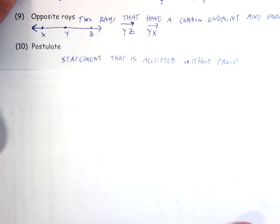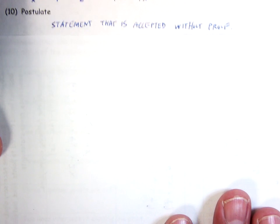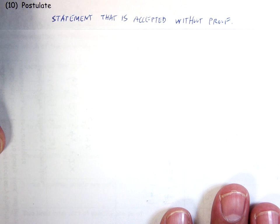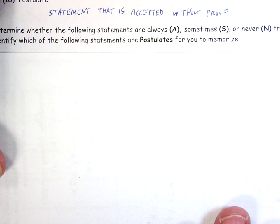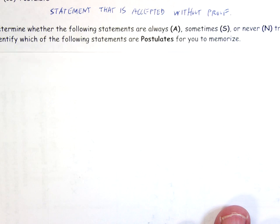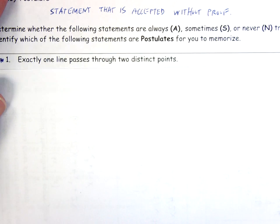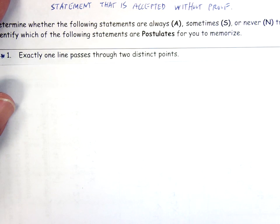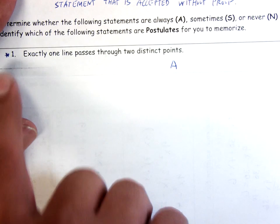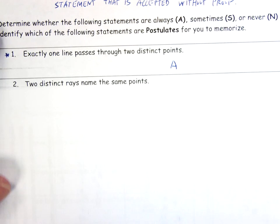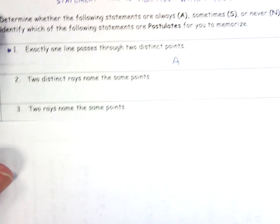Postulate, it's a statement that is accepted without proof. We just accept that it's true. We don't have to work out a proof to show it. And we'll quickly go through some of these. Just think about these. To benefit yourself, think about what the answers might be before you do it, and then compare your answers with mine. First one. Exactly one line passes through two distinct points. Is that always true, sometimes true, or never true? That one is always true. Put a little star by that one. Skip number two and number three. I don't really like those.